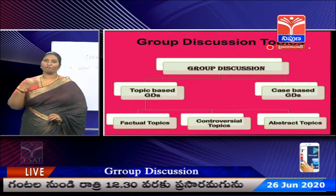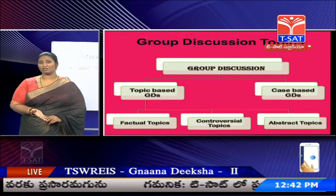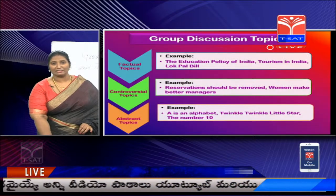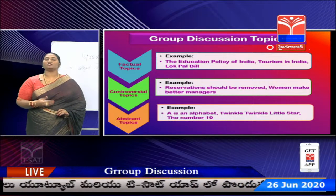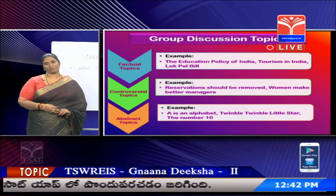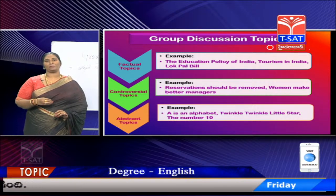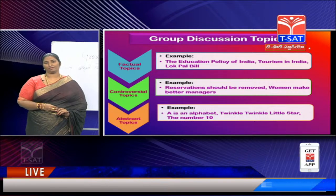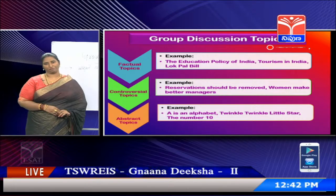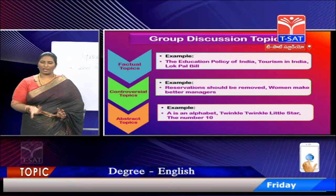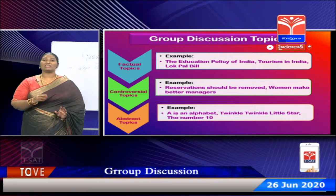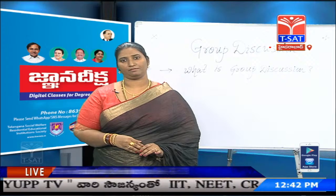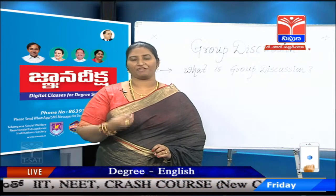Topic-based group discussions are categorized into three types: factual topics, controversial topics, and abstract topics. Factual topics are socio-economic topics given to test your general awareness — for example, the education policy of India. You cannot participate well unless you have enough data, facts and figures about the topic. It requires a lot of reading and preparation. Controversial topics are argumentative in nature — they generate controversy, and in such GDs, noise levels are high and tempers can flare.